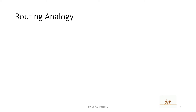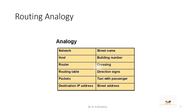The routing analogy is represented here. In this diagram, the network is analogous to the street name. The host can be analogous to the building number. The router can be analogous to a crossing. The routing table can be analogous to direction signs. Packets can be analogous to a taxi with the passenger. The destination IP address is analogous to the street address.